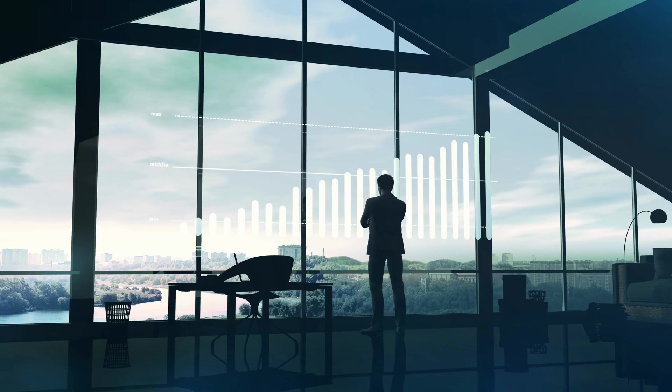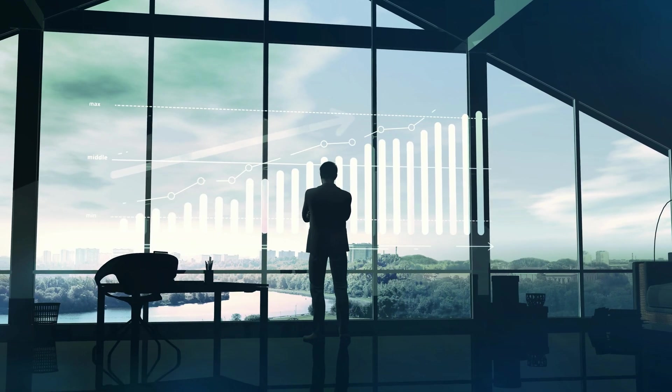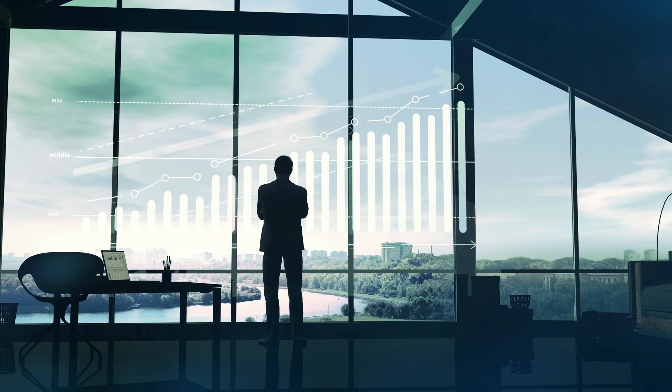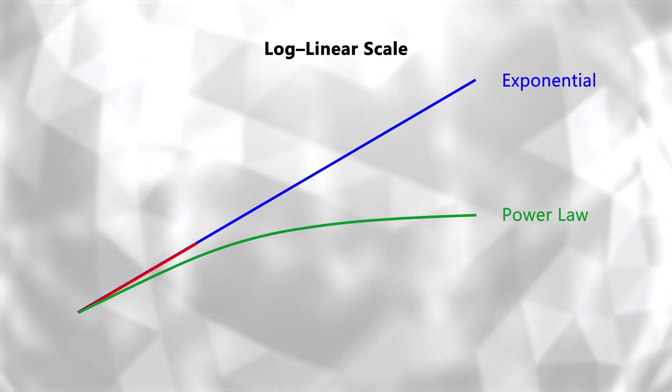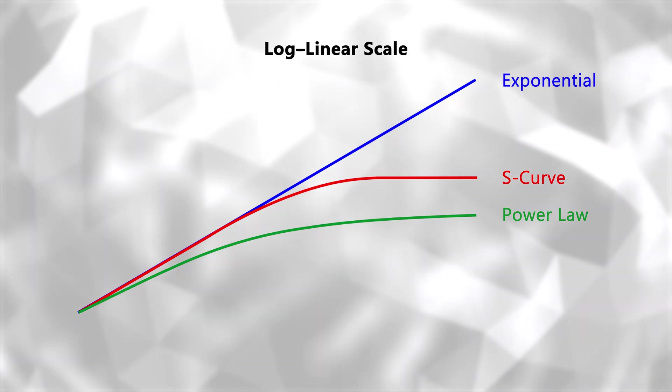When theta falls between 0 and 1, we start to see different types of growth patterns. When theta is between 0 and 1, we get an S-curve. Growth starts off fast, but it slows as the network approaches a certain size, or saturation point.